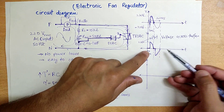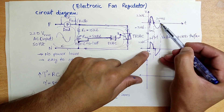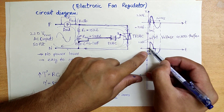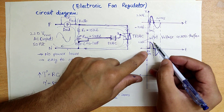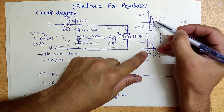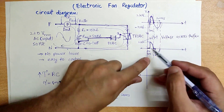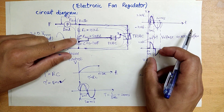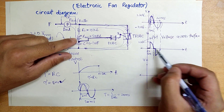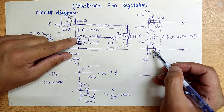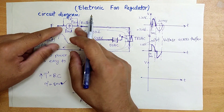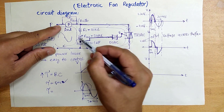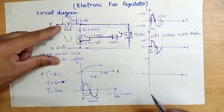The RMS value of the full 220 volt waveform is 220 volts, but this chopped waveform across the fan will have a lower RMS value because portions of both the positive and negative cycles are zero. We have extracted only part of the waveform for the load. By increasing or decreasing the variable resistor, we get different waveforms with more or fewer zero portions, which means we can increase or decrease the RMS voltage across the fan or bulb.